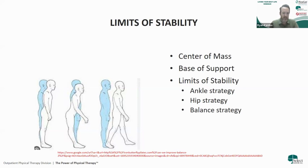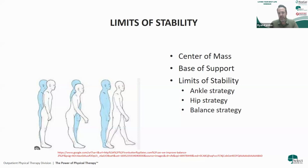If someone has really good balance, they can move their center of mass way far out from where their feet are and not lose balance. There are different strategies to maintain balance. An ankle strategy is leaning forward while keeping the body fully straight. If someone gives a moderate push, we use a hip strategy where the hips move. And for a big push, we use a stepping strategy — we actually have to take a step. Working through these strategies in the clinic is something I'll practice with patients.